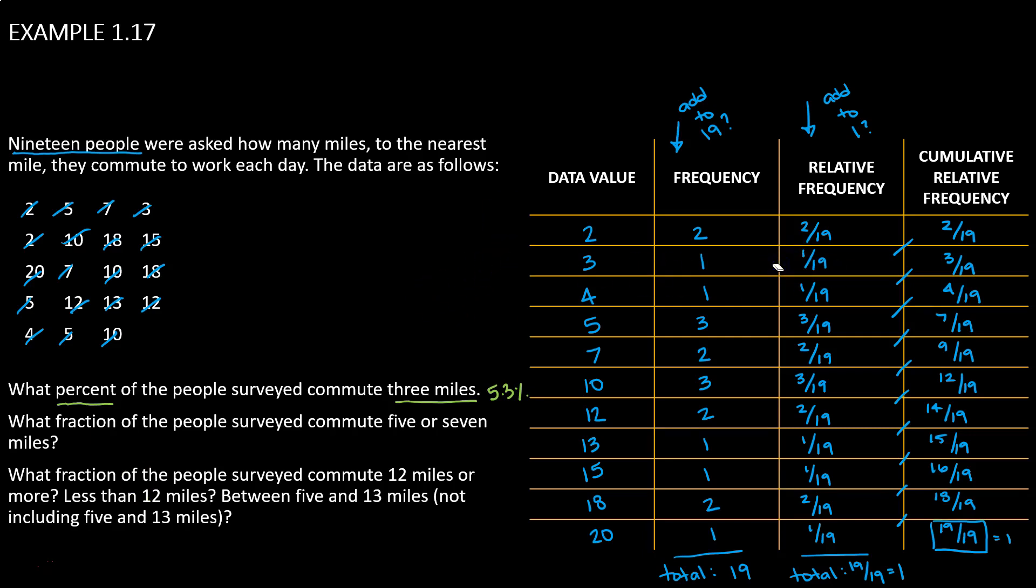Next, we're asked what fraction of the people surveyed commute 5 or 7 miles. 5 or 7 is saying that we're going to combine the fractions from the 5 row and the 7 row, so we're going to just add those fractions together: 3 over 19 for 5 miles, 2 over 19 for 7 miles. When we combine those, we get 5 over 19. This question is asking us for our answer to be in fraction form, so we will leave it as 5 over 19.